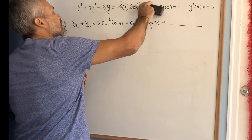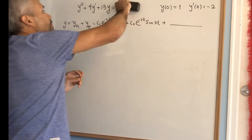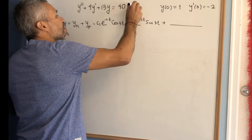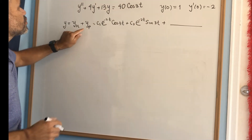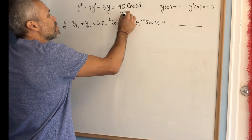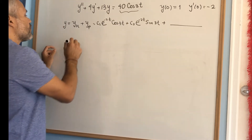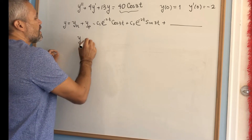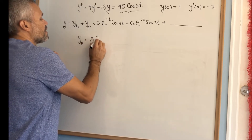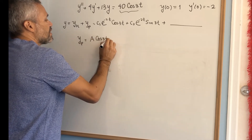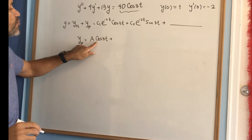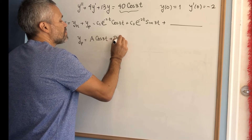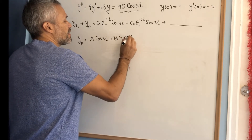Let's go back to the original equation to find a particular solution. We look at the non-homogeneous part and look for something similar. The particular solution is of the form A·cos(3t). Remember, any time you include cos(3t), you also need to include sin(3t), so we write A·cos(3t) plus B·sin(3t).